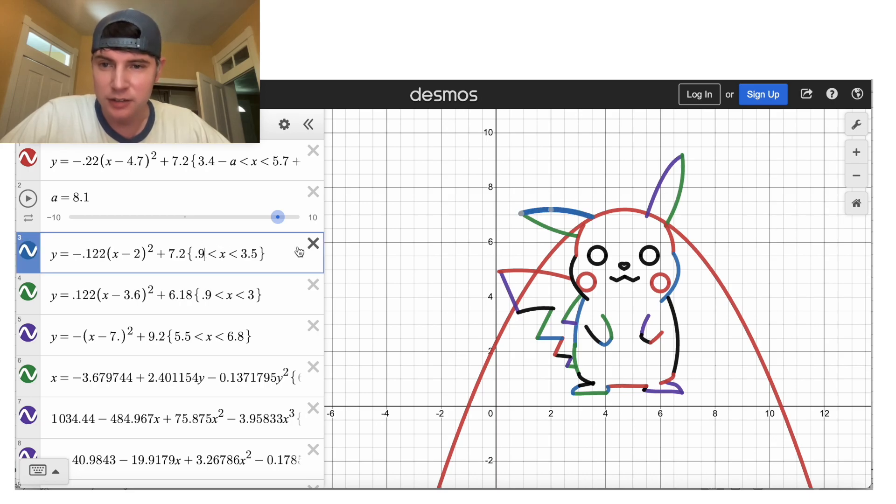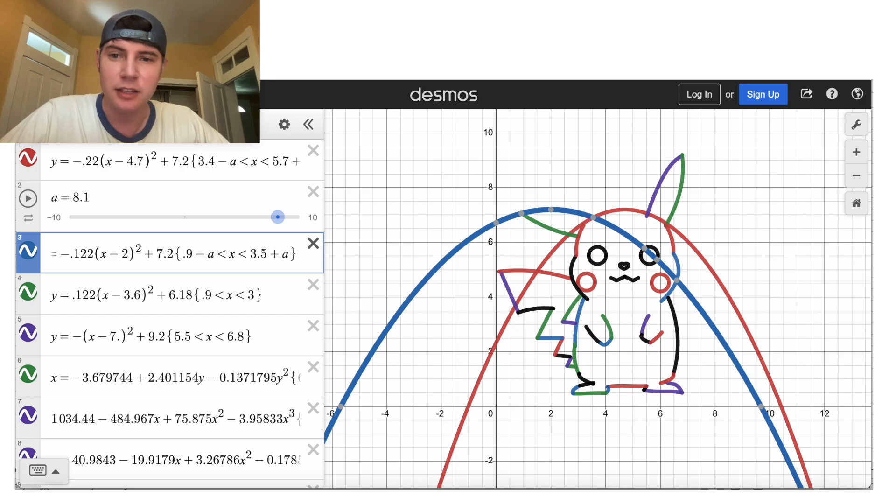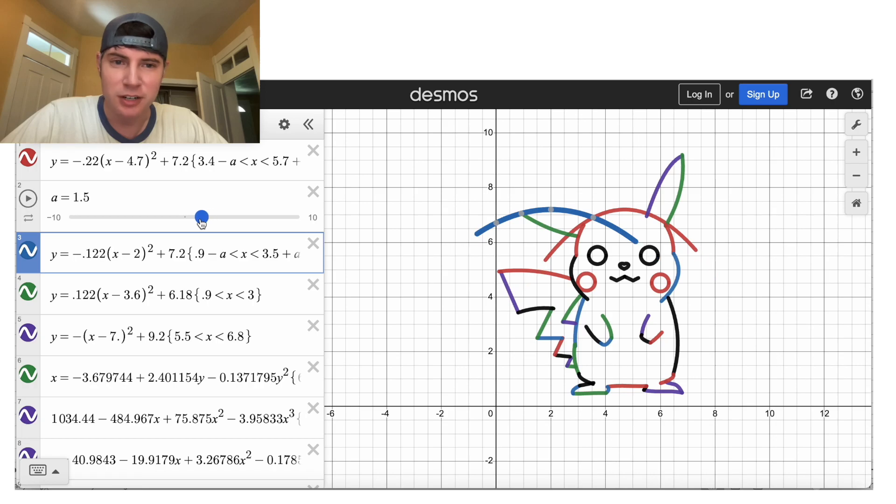And now if we do that to all of these, if I do minus A on the lower bound and plus A on the upper bound, then we have another one that's opened up. And then once again, as A approaches zero, there's zero right there, that's Pikachu.